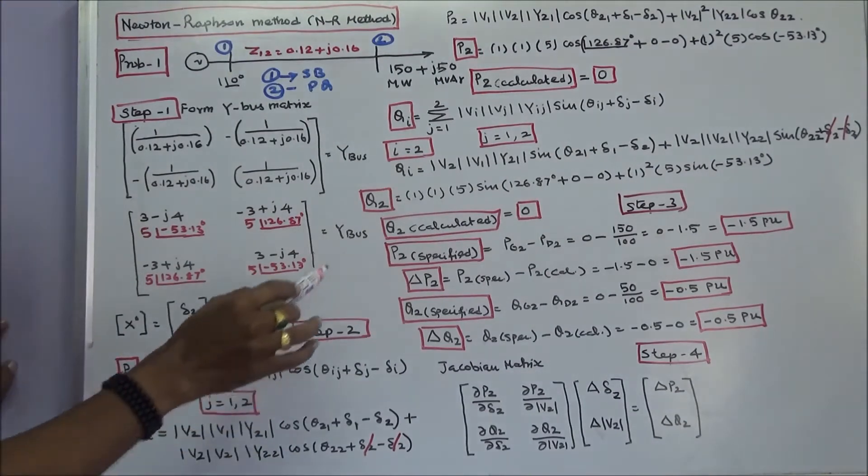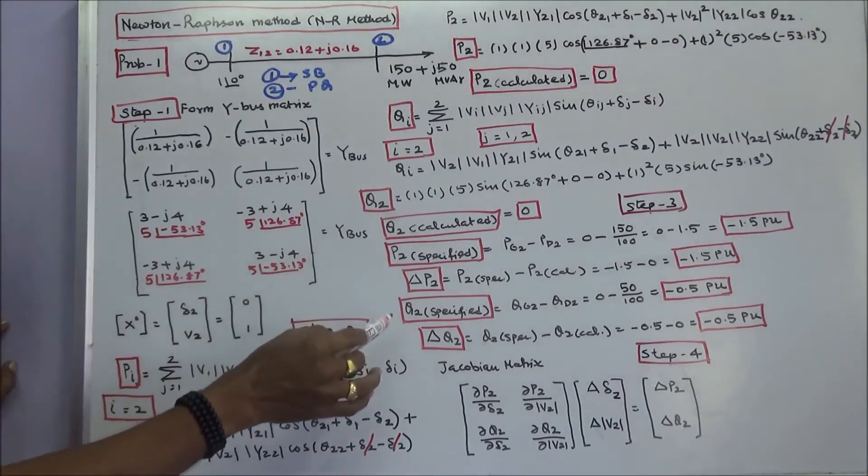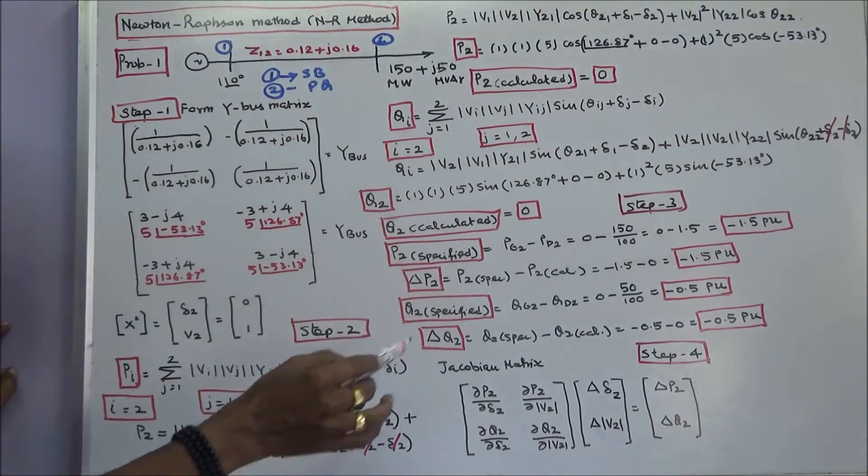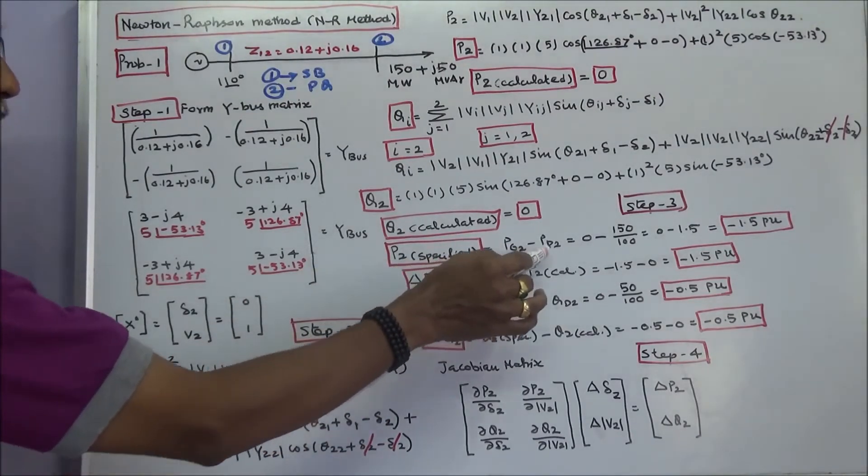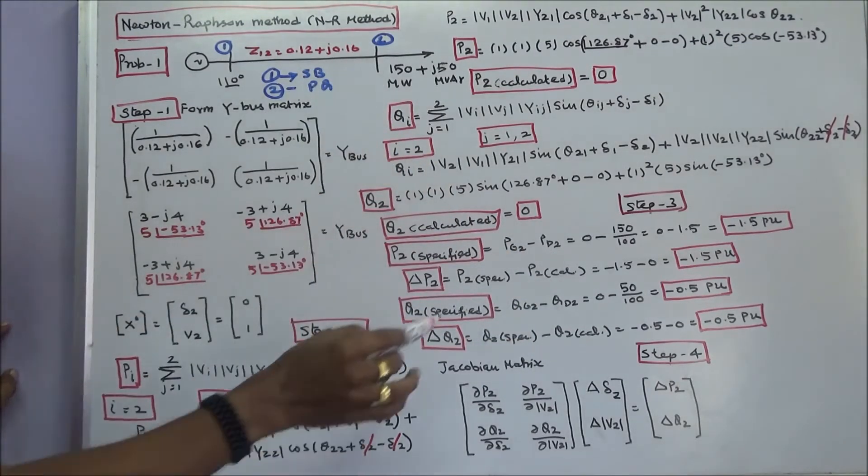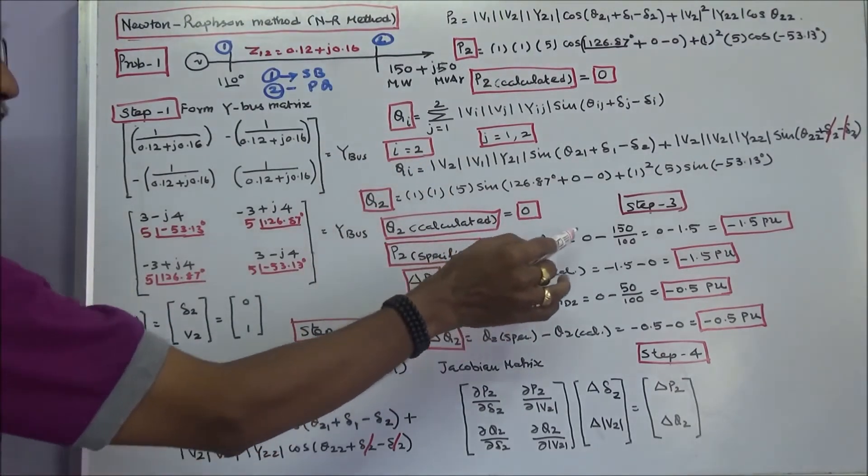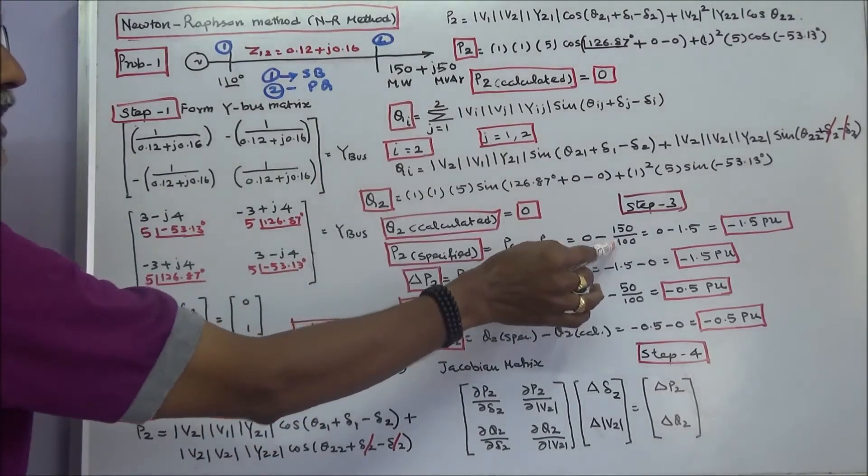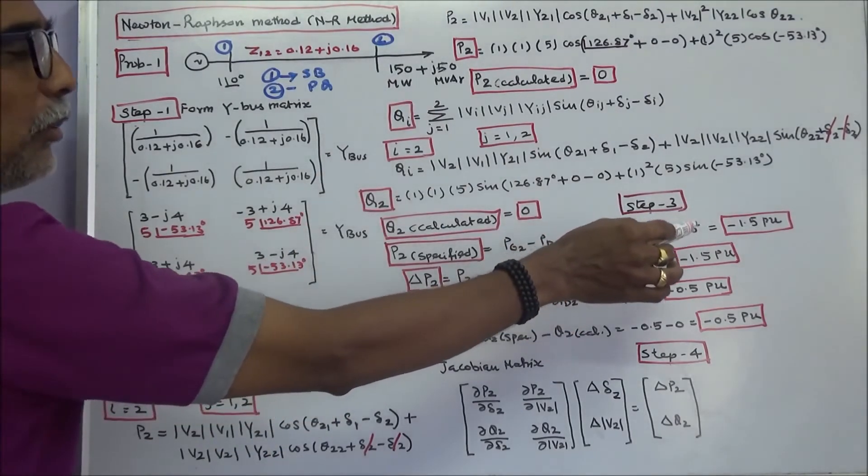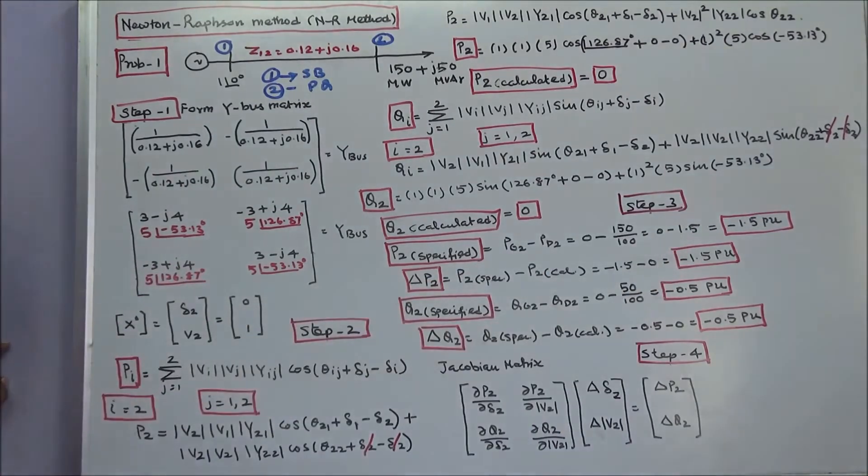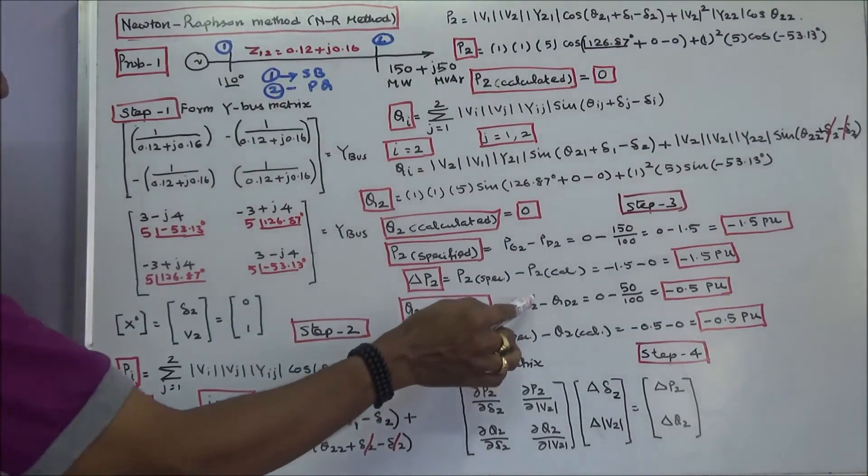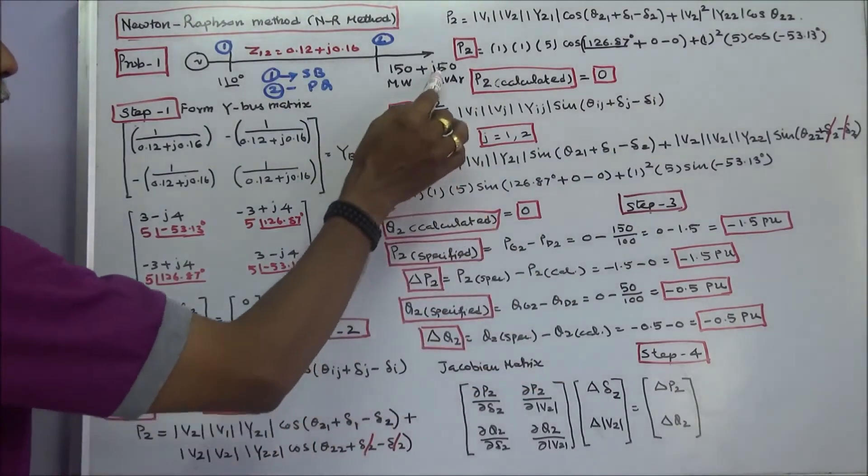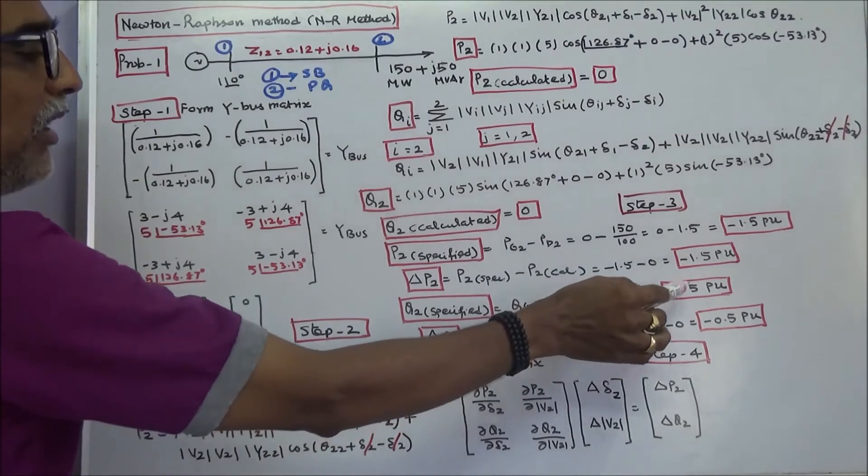I have to calculate the specified value of P2 and the specified value of Q2. P2 specified equals PG2 minus PD2. Since it is a load bus, the generation is 0. Therefore, 0 minus 150/100, this is base MVA, equals -1.5 per unit. Similarly, Q2 specified equals Q2 generation minus Q2 demand: 0 minus 50/100 equals -0.5 per unit.